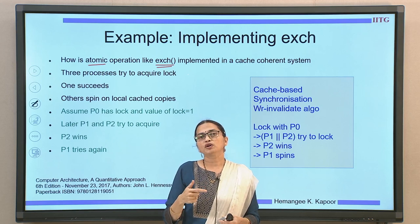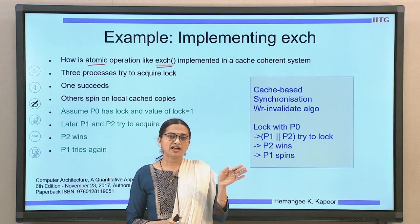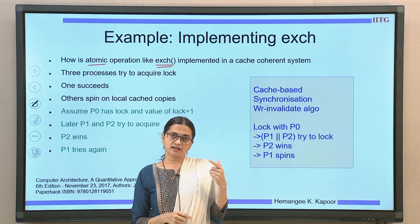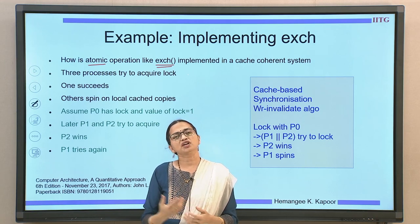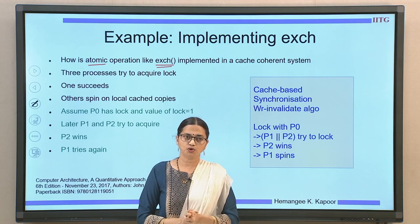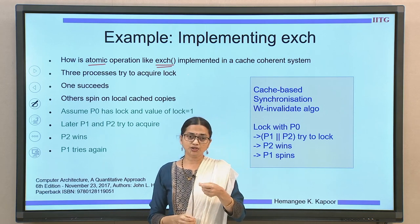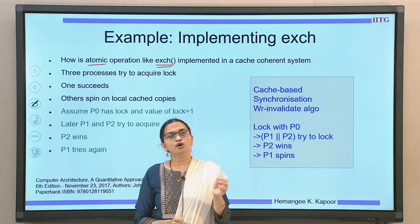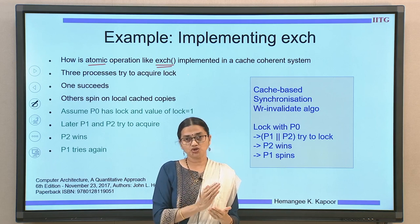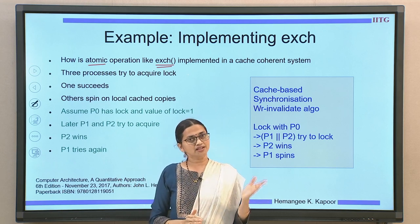Our example has three processes all intending to acquire the lock variable. Everyone spins on the local cache copy, checking if the lock is free. We assume the lock is already acquired by P0 — P0 holds the lock with value 1. When P1 and P2 try to read the lock variable in their local cached copies, they see the lock is equal to 1, meaning somebody has already acquired it. P0's exchange instruction will invalidate P1 and P2's local copies.